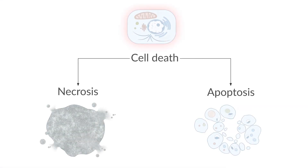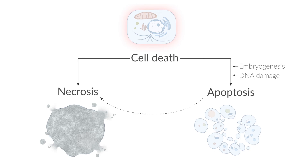Apoptosis can occur under physiological conditions, such as the removal of unwanted cells during embryogenesis. It can also occur as a response to cell injury, such as DNA damage, in cases where the cell remains capable of activating the cell death program. If there is severe damage and the cell lacks the energy to undergo organized degradation, it can shift from apoptosis to necrosis.